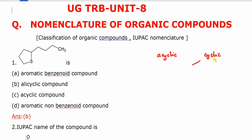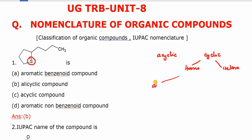Cyclics are two types: homocyclic, where all atoms in the ring are carbon, and heterocyclic, where there is a hetero atom in the ring. Now, in homocyclics, there are aliphatic and aromatic types.